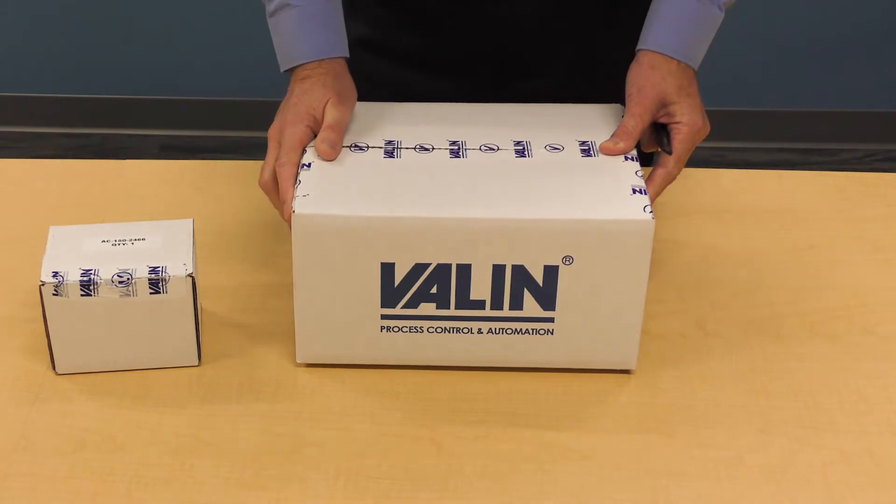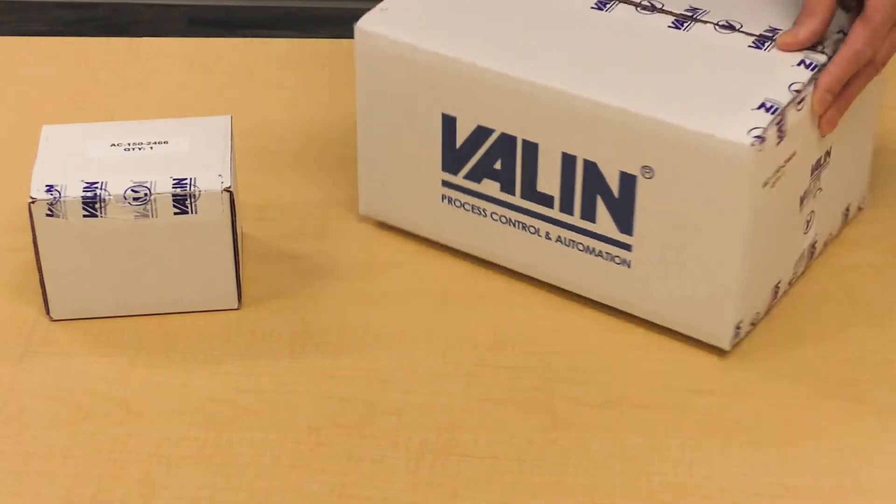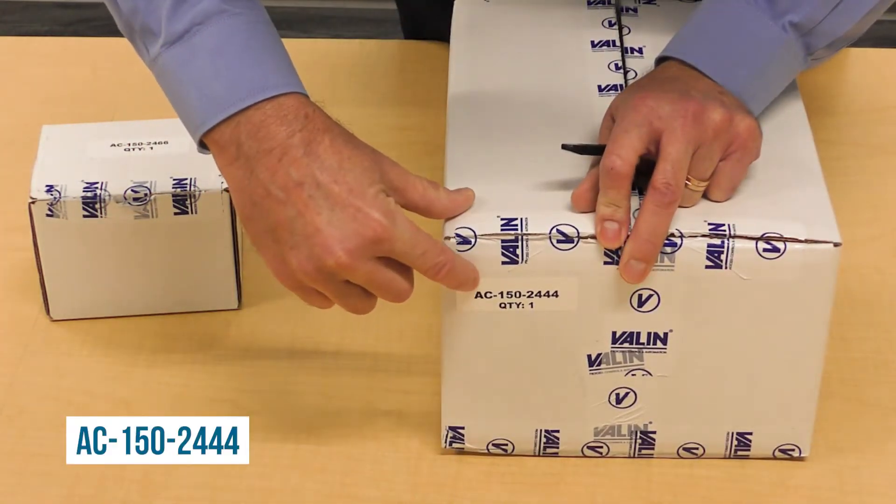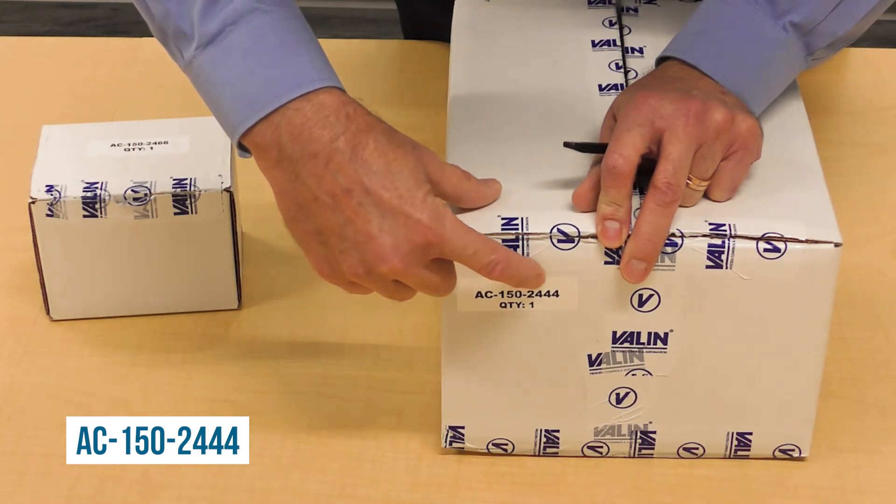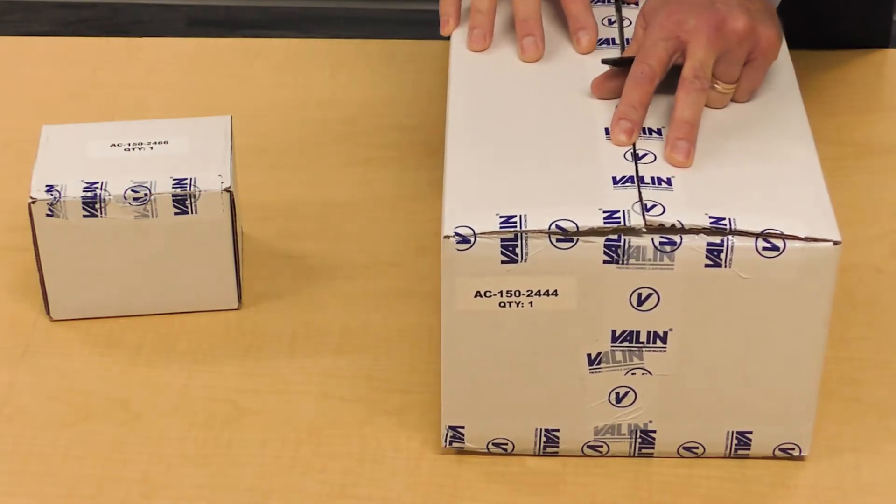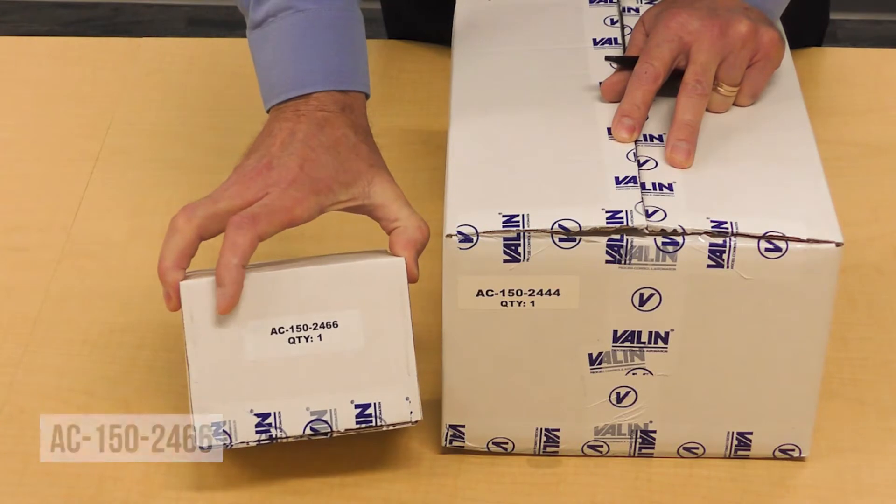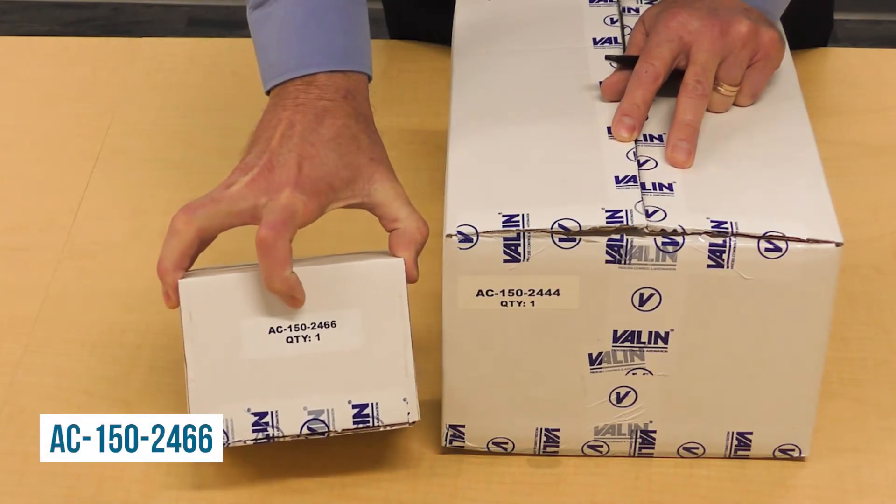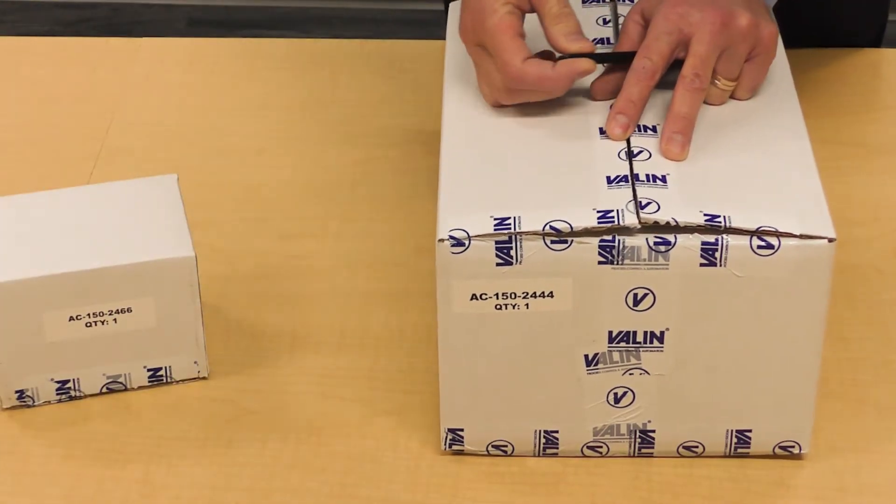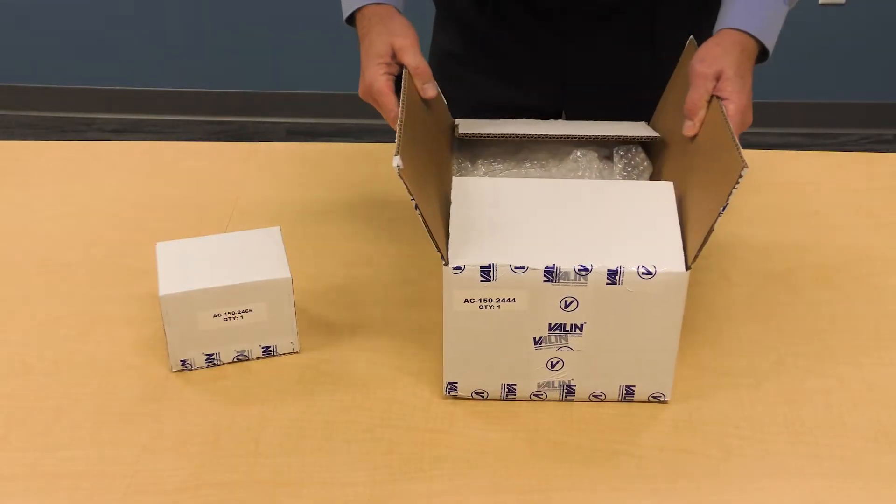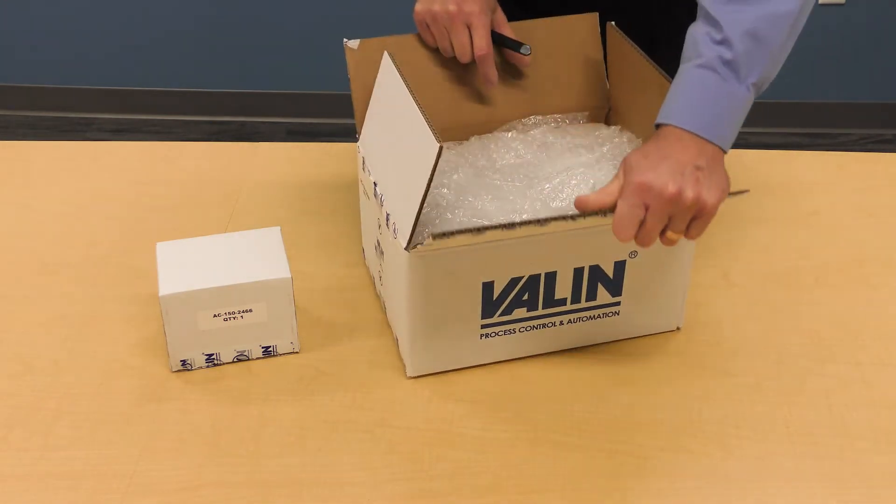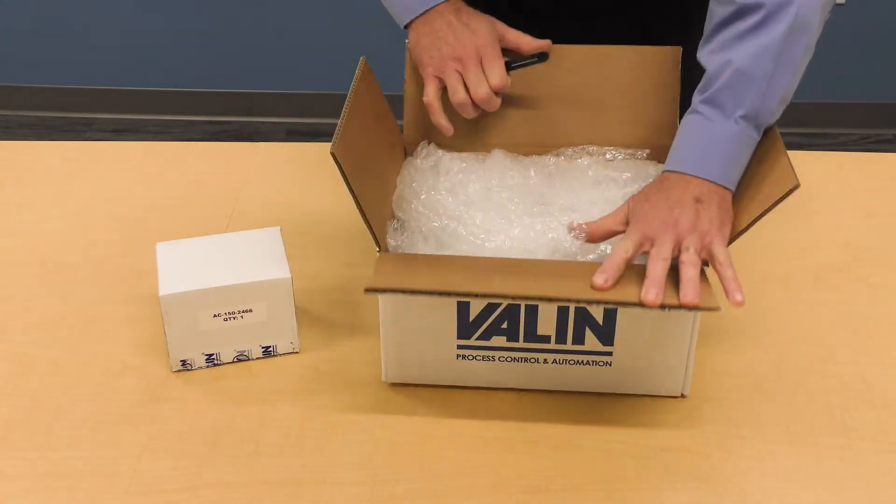These will help me upgrade my Applied Materials Centura machine. I've purchased a port number AC-150-2444, which is a gas box manifold replacement for my tool, and also the AC-150-2466, which allows me to connect to the existing NF3 interlock system. This new product will alleviate a lot of headaches and give me better performance.